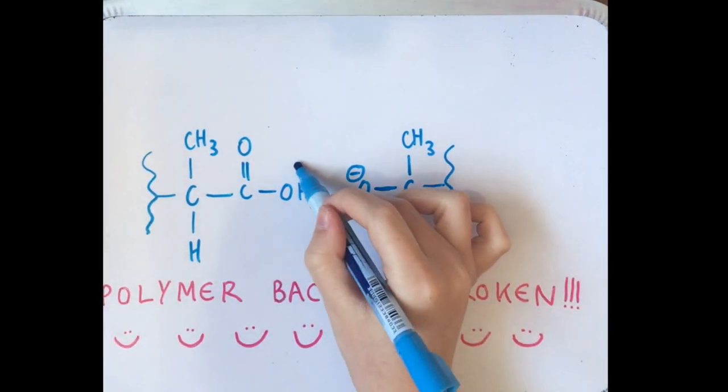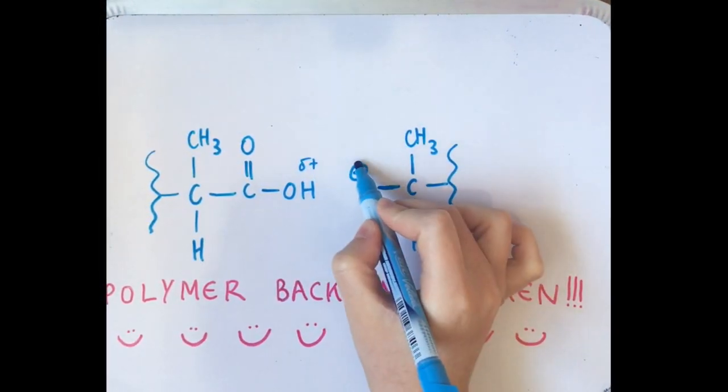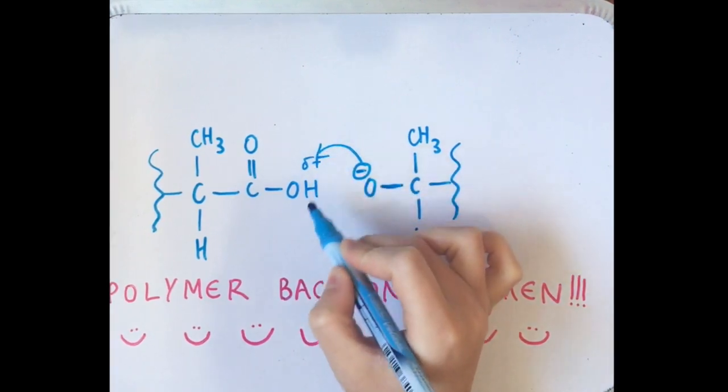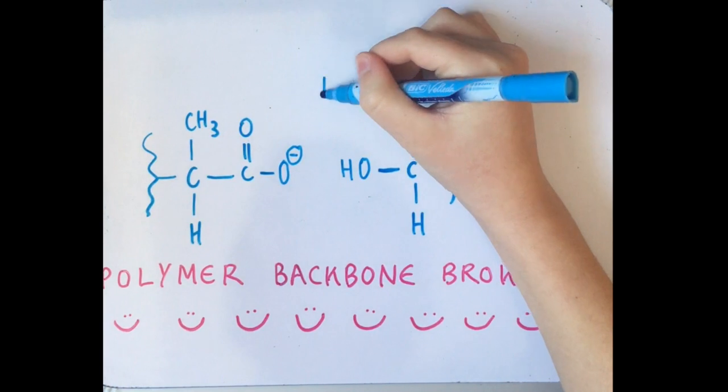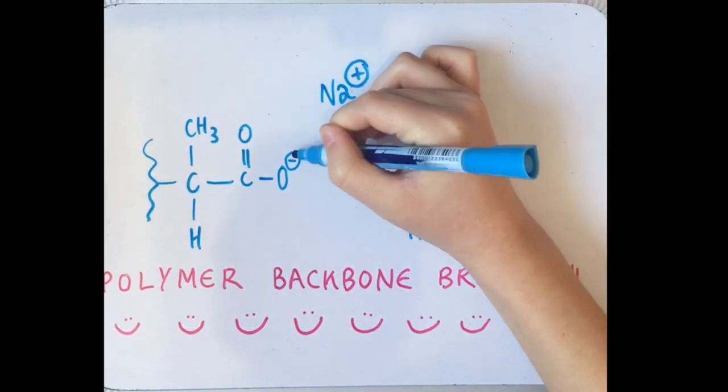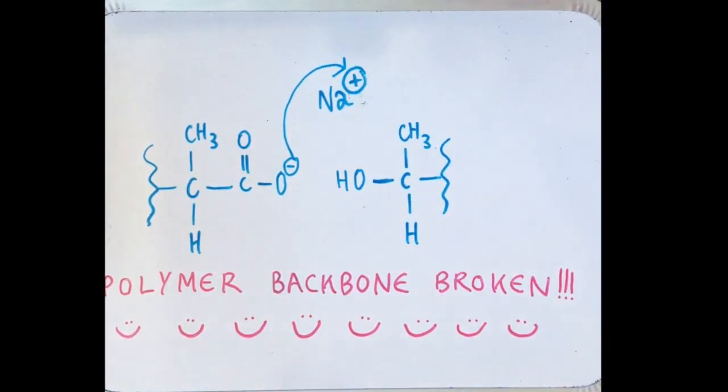Once broken, the negative oxygen will pick up the delta positive hydrogen in the OH group of the carboxylic acid. This forms a carboxylate ion which can bond with the positive sodium to form a carboxylate salt.